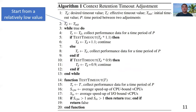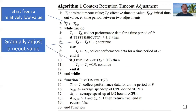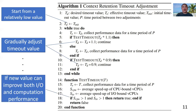As shown in the algorithm, the timeout value is initiated with a relatively low value. Then, the timeout value is gradually adjusted. Specifically, the algorithm slightly increases or decreases the value and checks the corresponding performance. If both IO performance and computation performance are improved with a new value, the timeout value will be set to this new value.